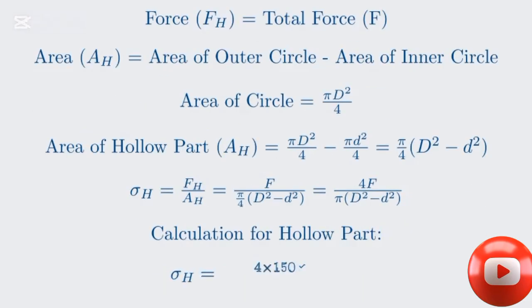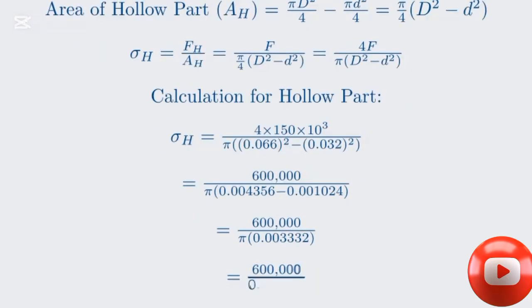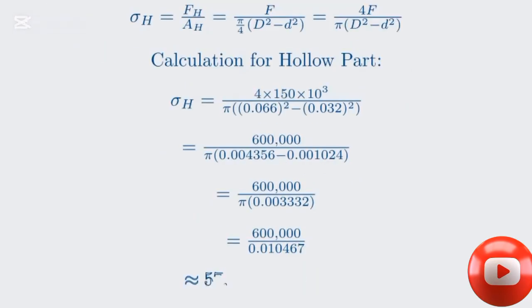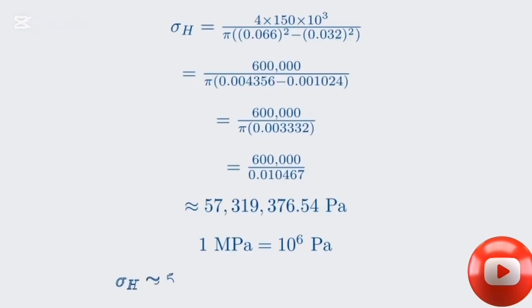We have 4 times the force, which is 150 times 10 to the power of 3, divided by pi times 0.066 squared minus 0.032 squared. This calculation yields a result of 57,310,376.54 pascals. To make this number more manageable, we'll convert it to megapascals. One megapascal is equal to one million pascals. Therefore, our stress is approximately 57.319 megapascals. Notice how this answer matches the memo exactly.